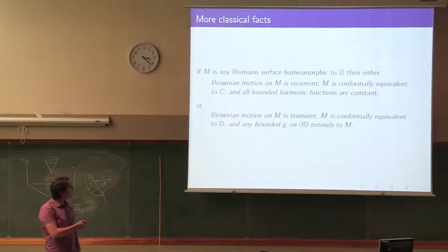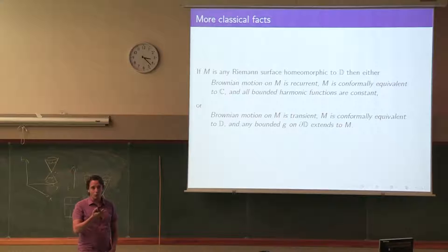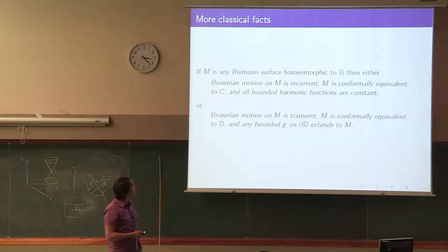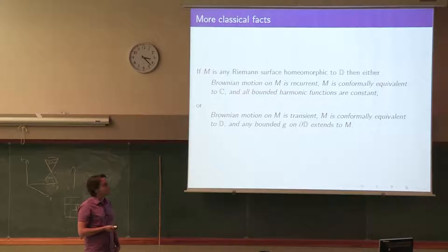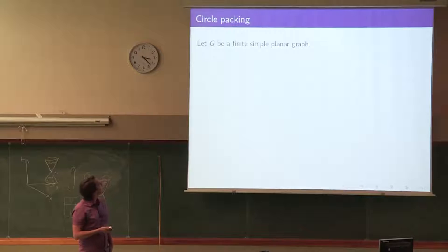The other side of the dichotomy is the hyperbolic one — a surface in which the Brownian motion is transient. The surface will be conformally equivalent to the open unit disc, and any bounded harmonic function is an extension of a bounded function on the disc. These are pretty classical things, and we want to find the discrete version of them.